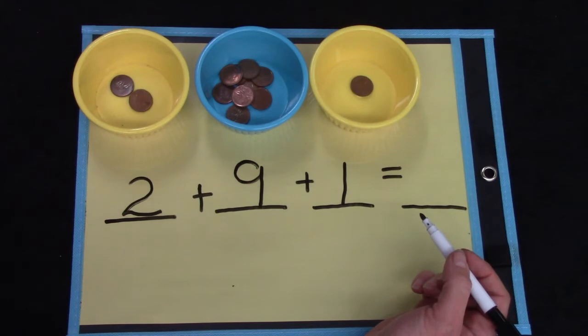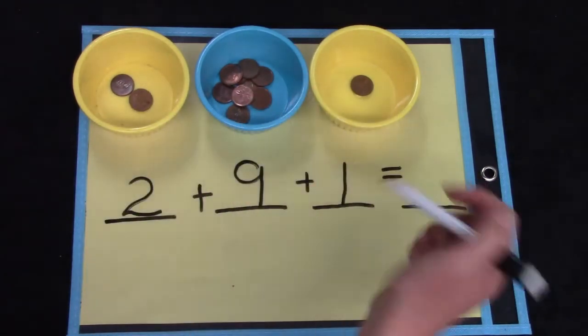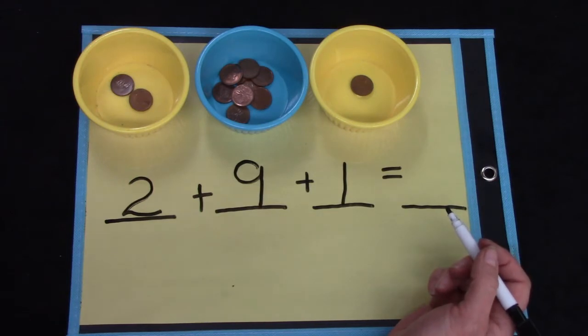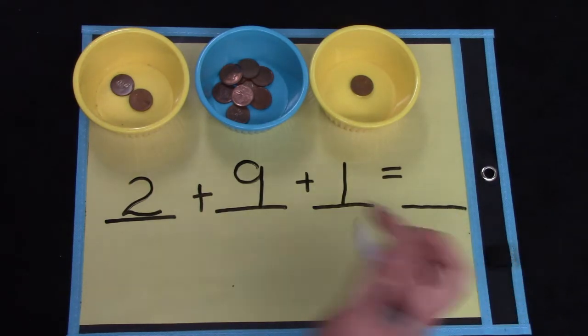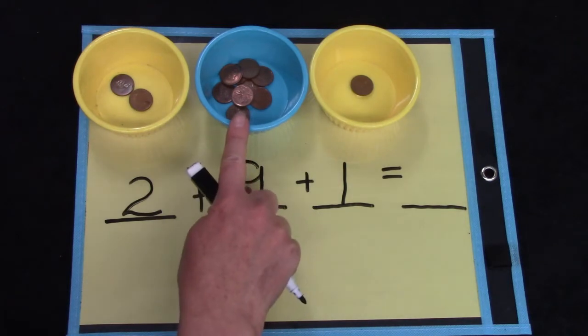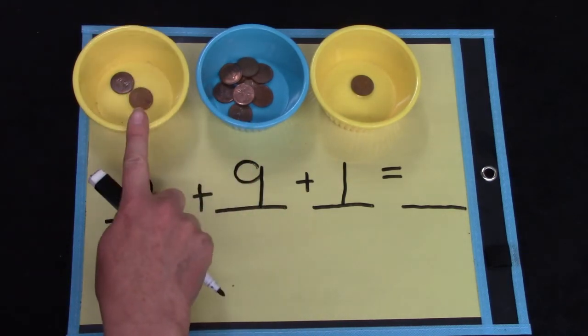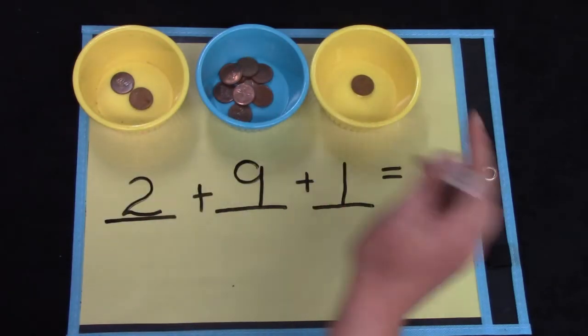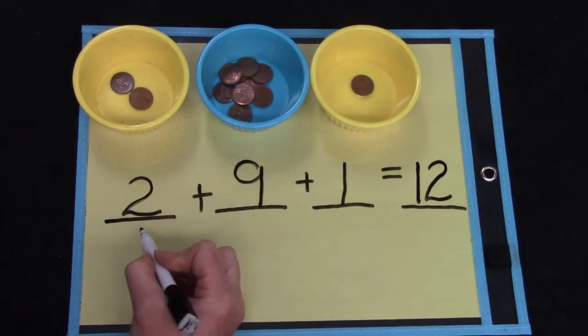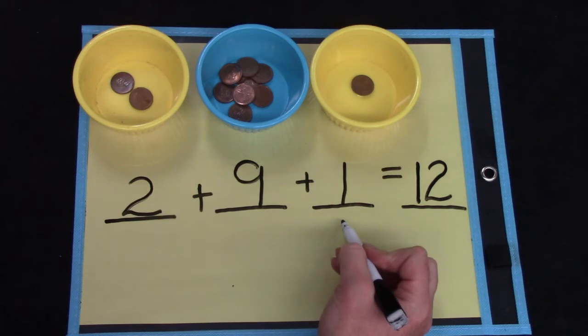One of the ways that I could figure out this problem is that I could take all these pennies out and I could count them. Or I could start with the largest number nine and add two more. Nine, ten, eleven, twelve. And then I would be saying two plus nine plus one is twelve.